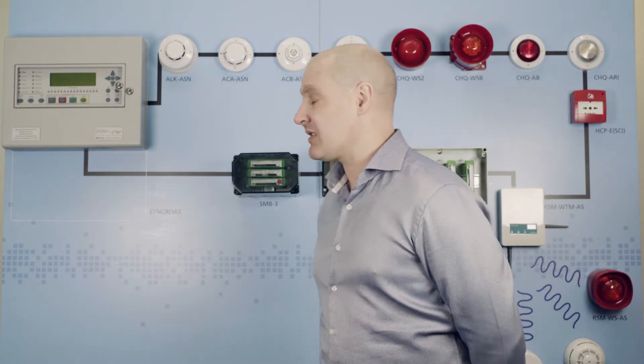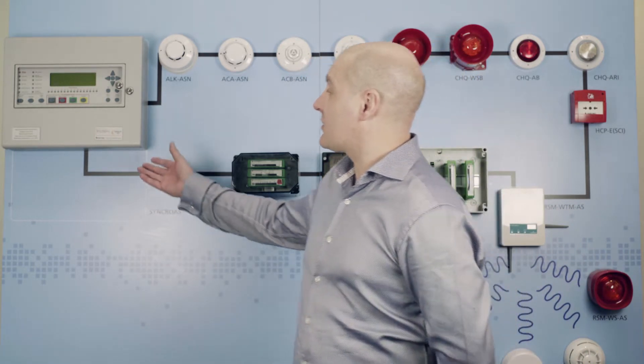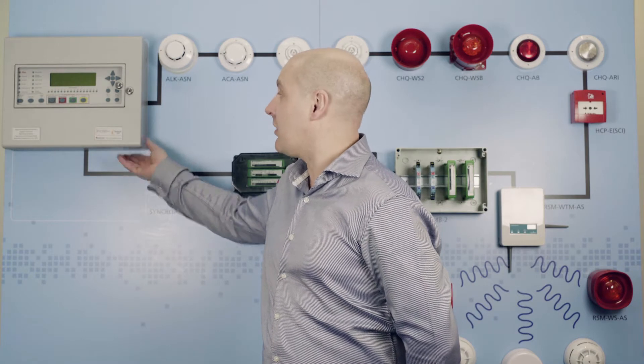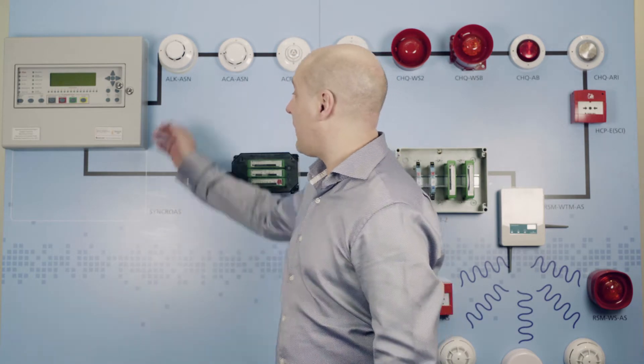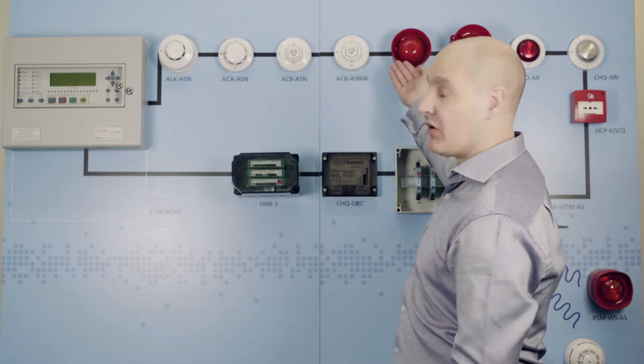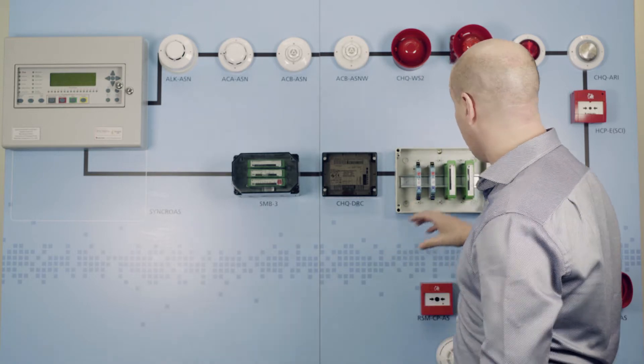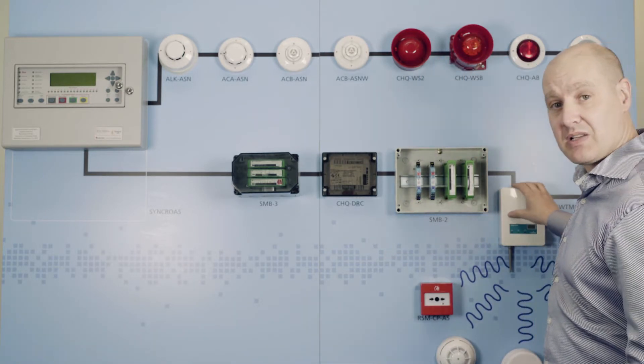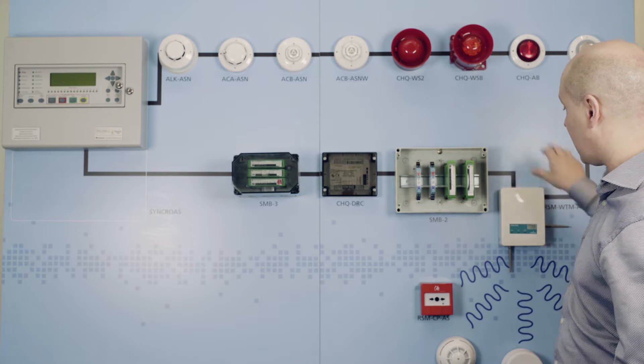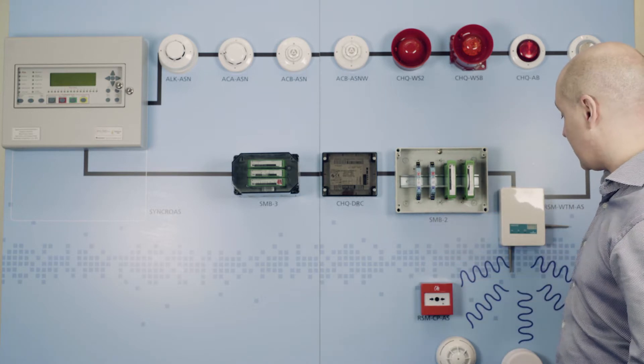The system can be as simple as installing a small Synchro addressable panel having some hardwired detection on a loop, and then on the loop we simply put a translator module which will give us the propagation in that area of the wireless product itself.